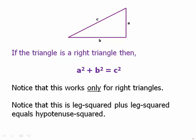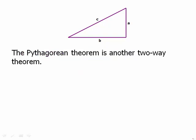Notice that this is leg squared plus leg squared equals hypotenuse squared. It's lengthier to say that, but notice that what we're doing is we're squaring the two legs, adding them together, and that equals the hypotenuse squared. Now that's very important because of course we can change the letters around, but it won't change that relationship.